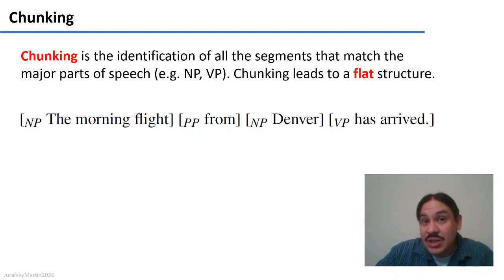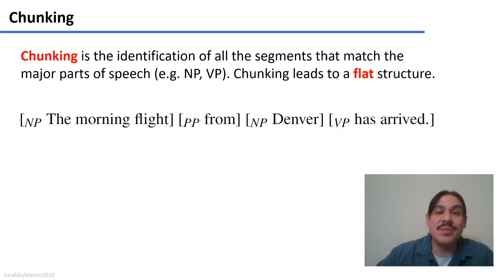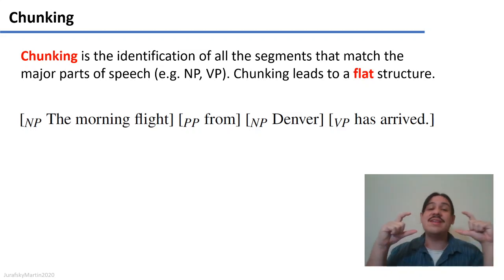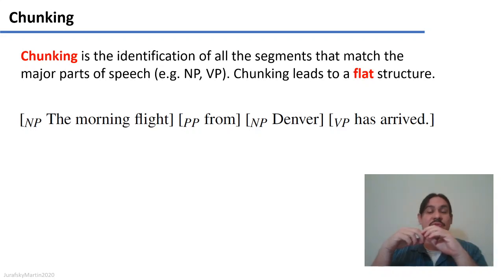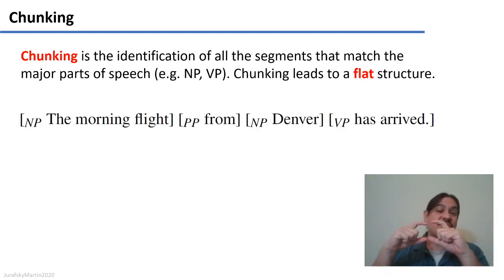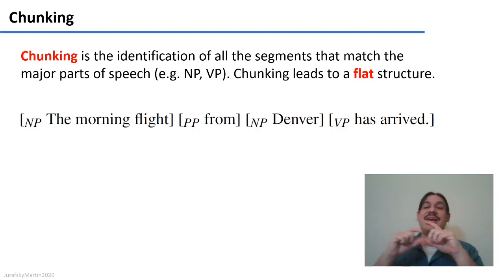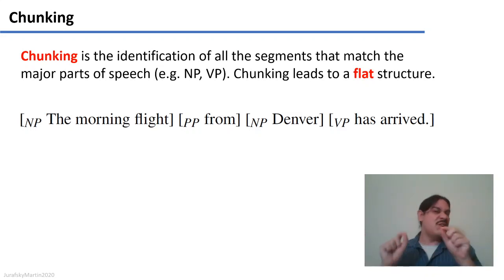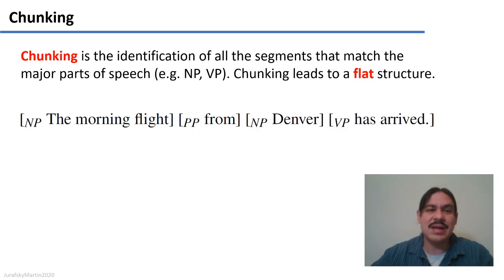A chunking operation could be like the one here, where you have 'the morning flight' — identified as a noun phrase — 'from', part of a prepositional phrase, 'Denver', another noun phrase, and 'has arrived', a verb phrase. We're not interested in any further detail of how it works inside.